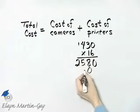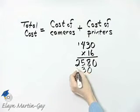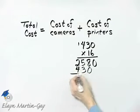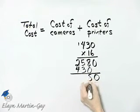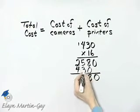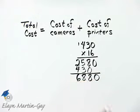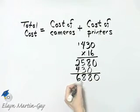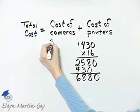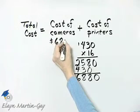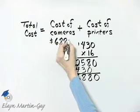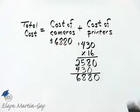Then 1 times 0, 1 times 3, 1 times 4. And then I'm finding the sum of the partial products. The cost of the cameras is $6,880.